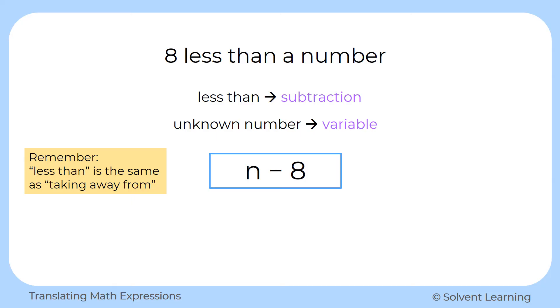Because with subtraction, the order does matter. So if we wrote this as eight minus n, it would not be correct. So be very careful with that.